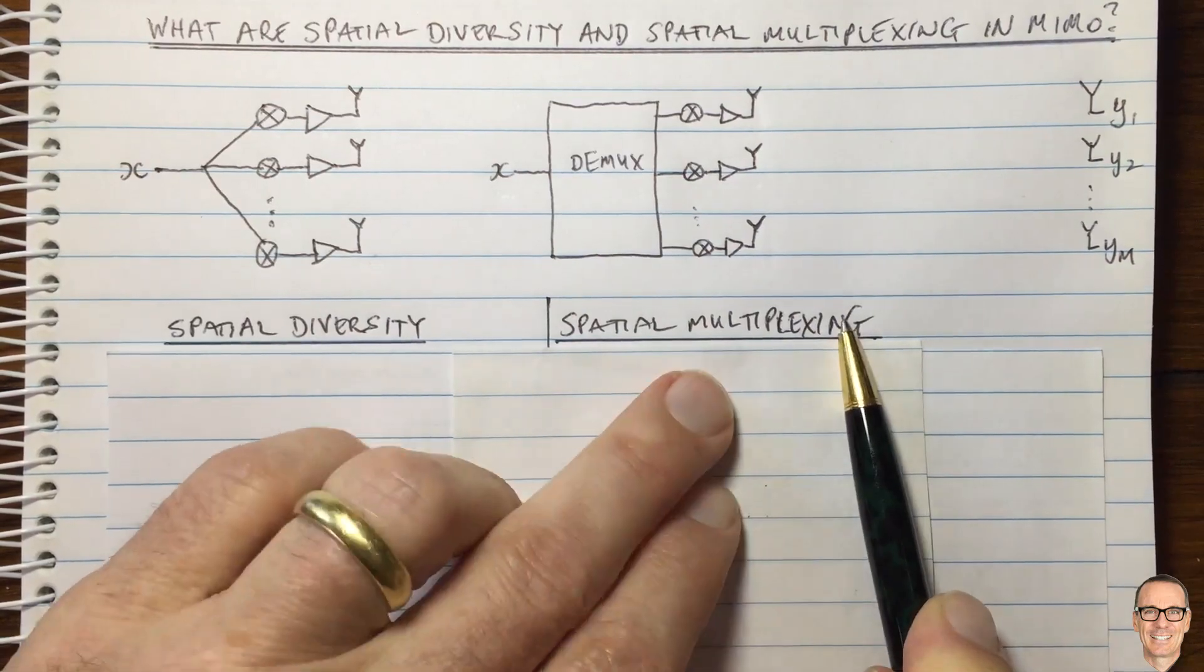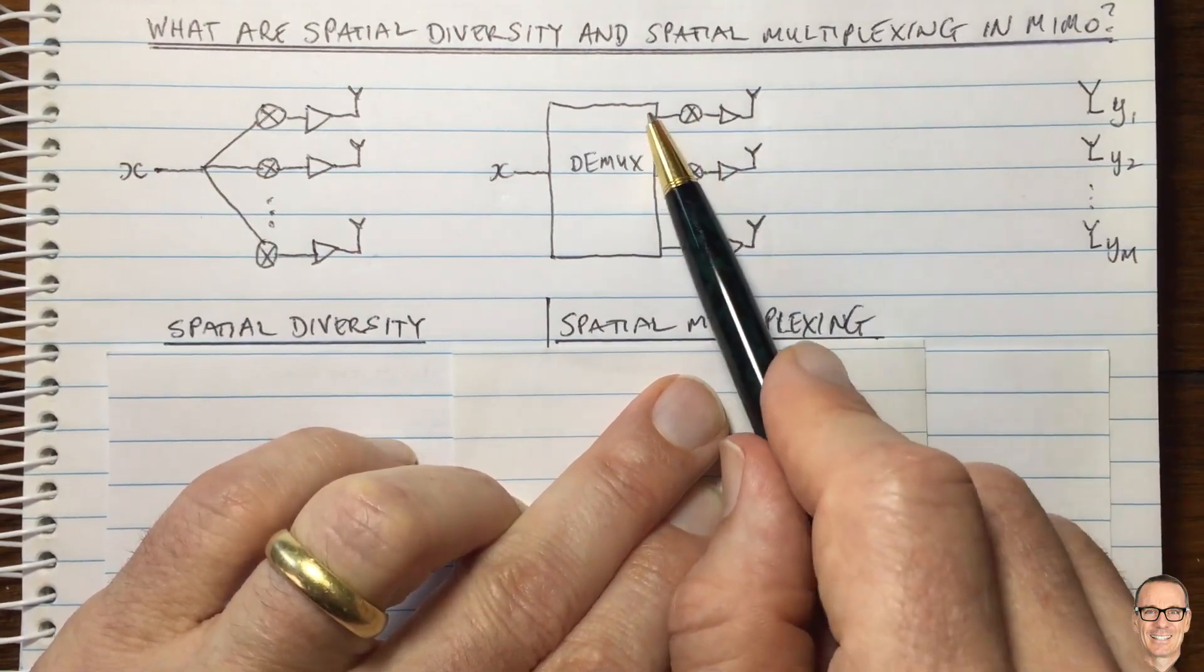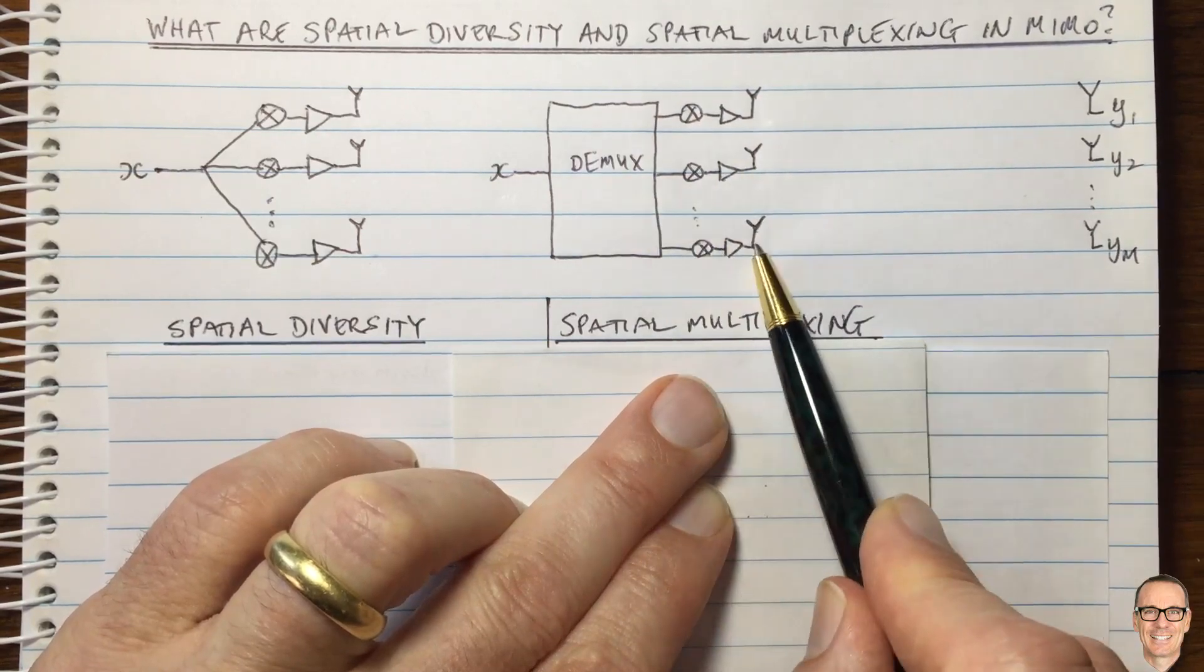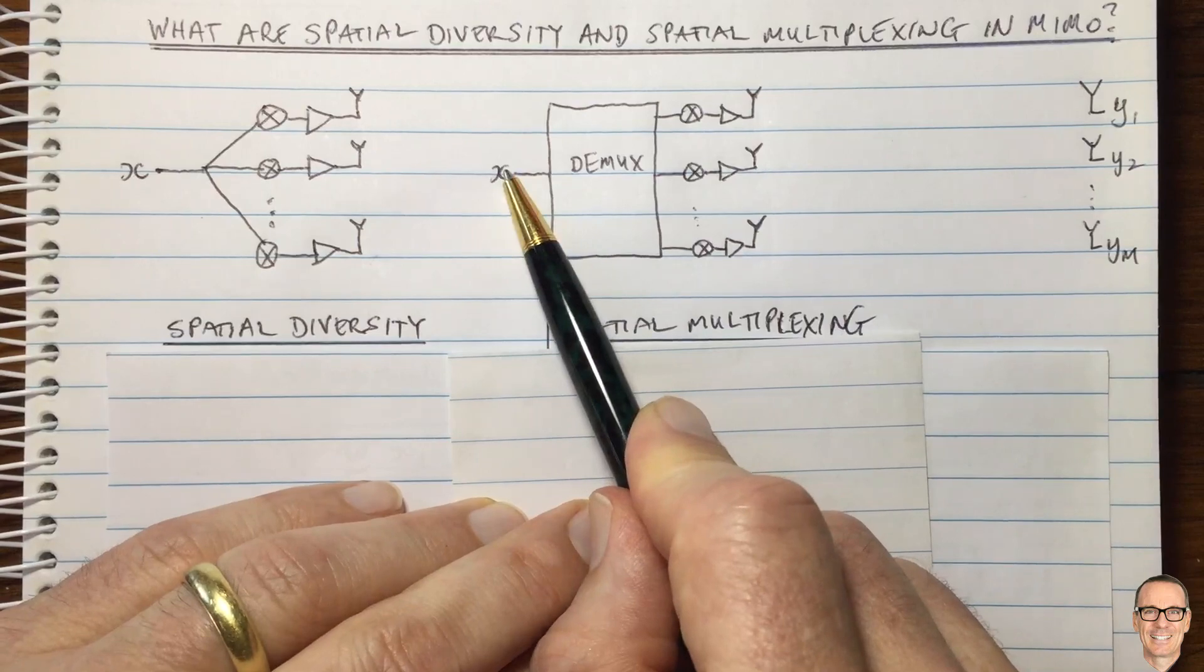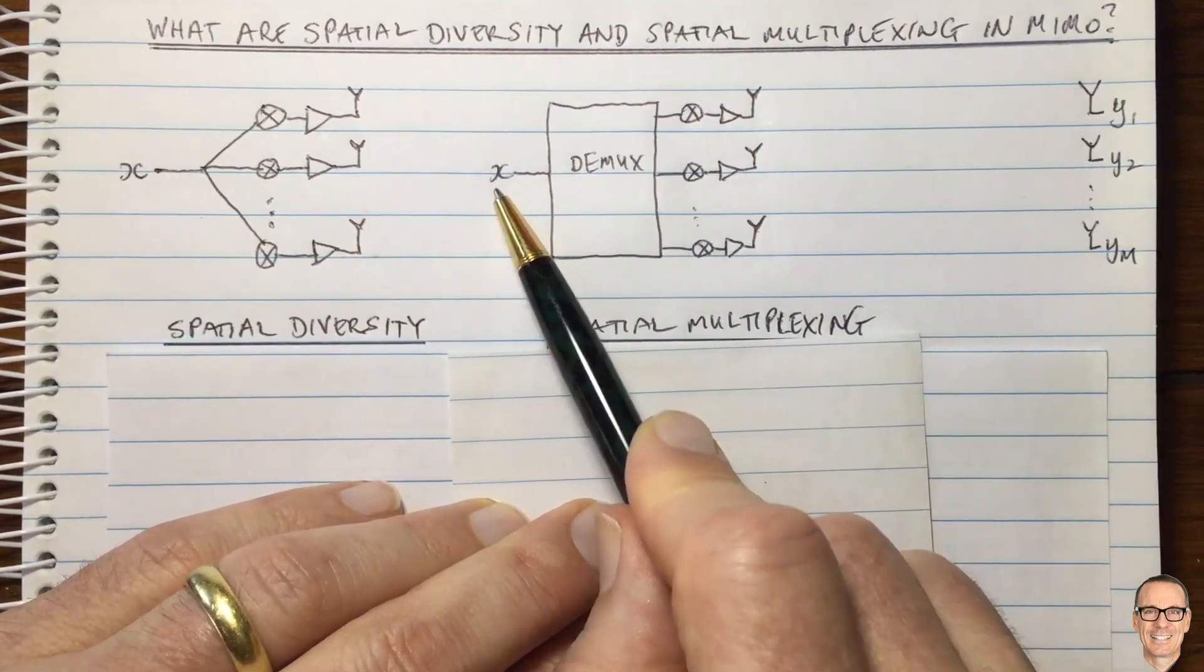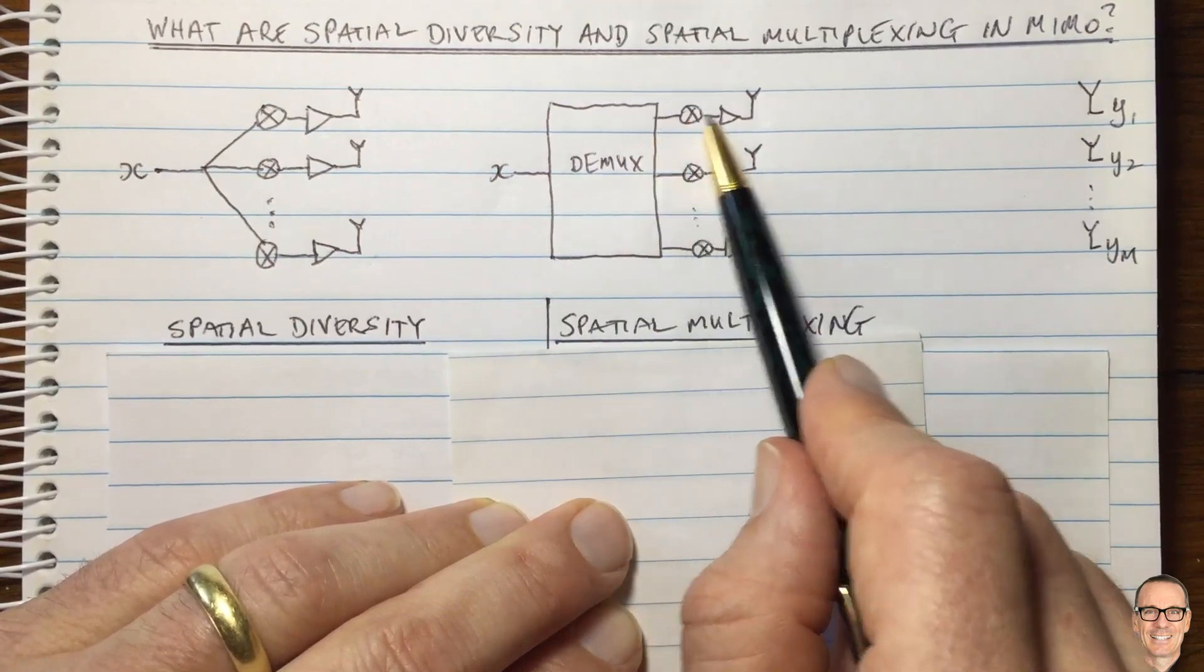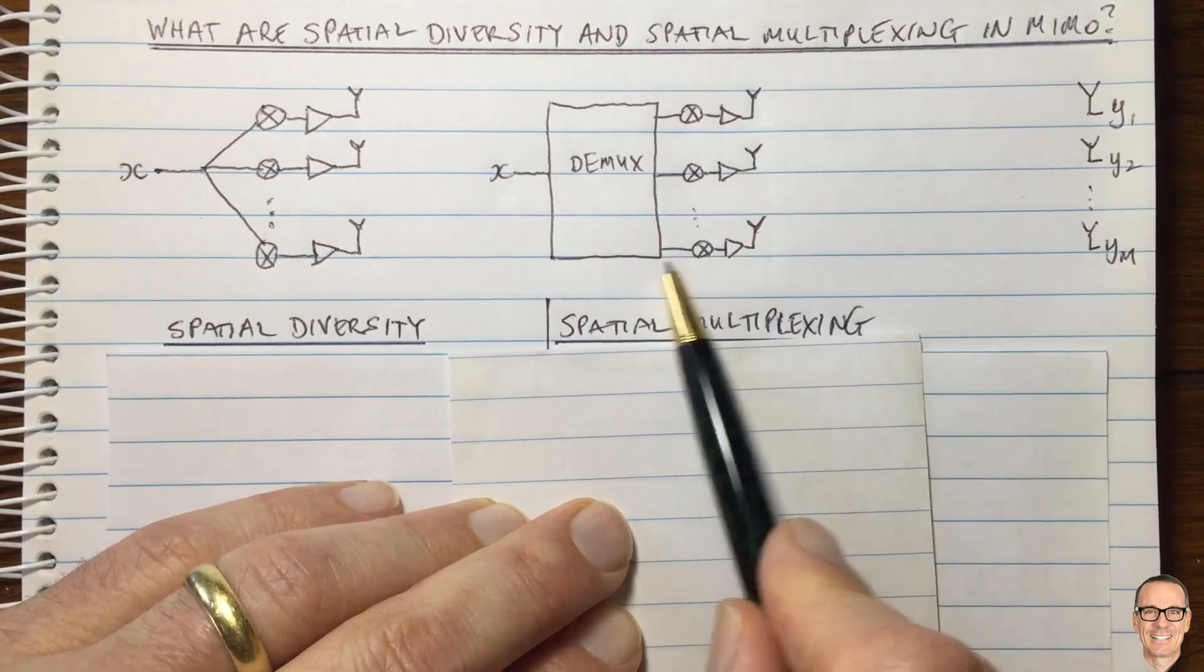So this is called spatial multiplexing, because now you are multiplexing in the channel. You're sending in parallel separate data sequences. They all come from the original one, but they're demultiplexed. So different components of the original sequence are going off. Every Mth symbol will go off the first one, every M plus one offset will go off the second, and so on.